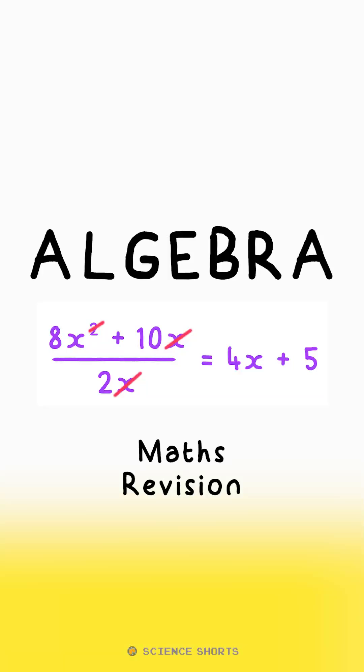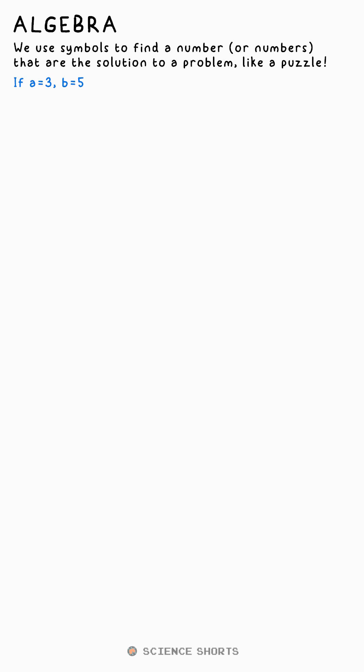We can use symbols, including letters, to represent numbers in an expression. Let's say A happens to be three and B is equal to five.